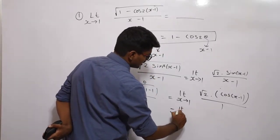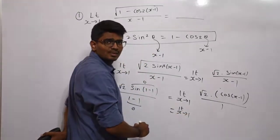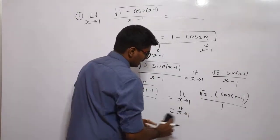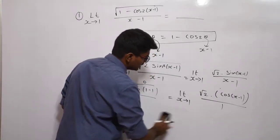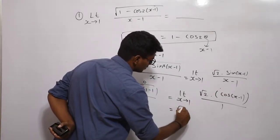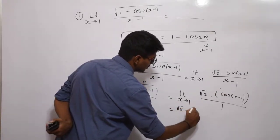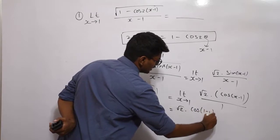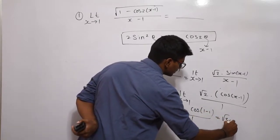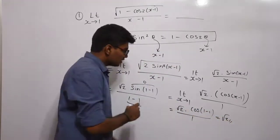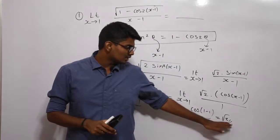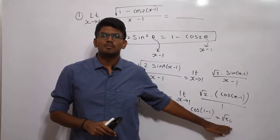Substituting directly, we get root of 2 into cos(1 minus 1) divided by 1, which equals root of 2 into 1, which is root 2. So we got the answer root 2.